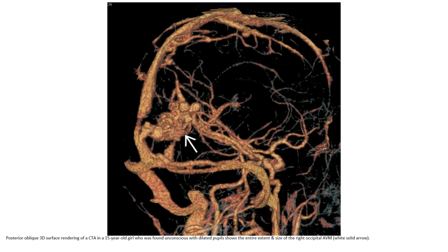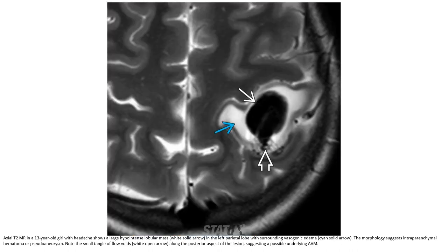CTA in the same 15-year-old shows the entire extent of the right occipital AVM. CTA in a 13-year-old with headache shows a large hyperdenseglomus in the left parietal lobe with surrounding vasogenic edema. The morphology suggests intraparenchymal, aneurysmal, or pseudoaneurysm component. Note the small tangle of flow voids along the posterior aspect of the lesion, suggesting a possible underlying AVM.